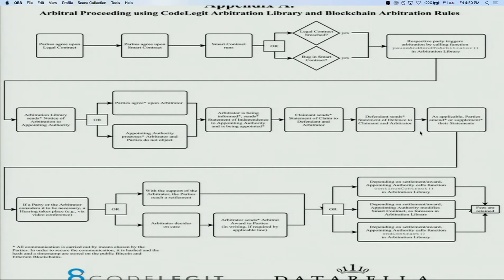Once the smart contract starts running, if the legal contract is breached, the parties get a choice to trigger the arbitral process via a code. The arbitration library then gives notice to the parties of whoever was appointed as arbitrator; if they're happy, they move on. Once the parties send their memoranda — their claims and defenses — to the arbitrator, the procedure starts.